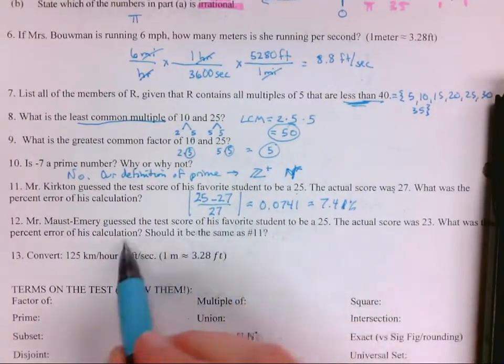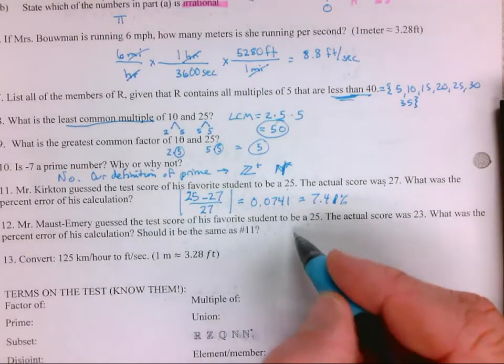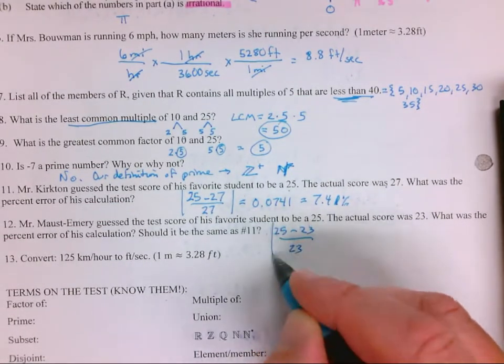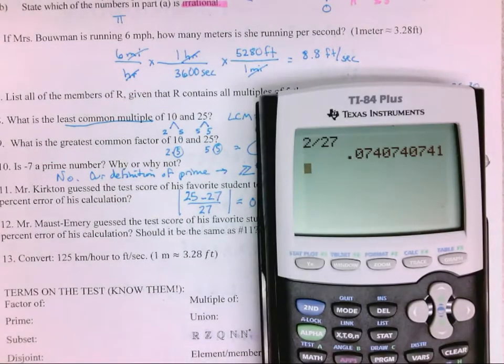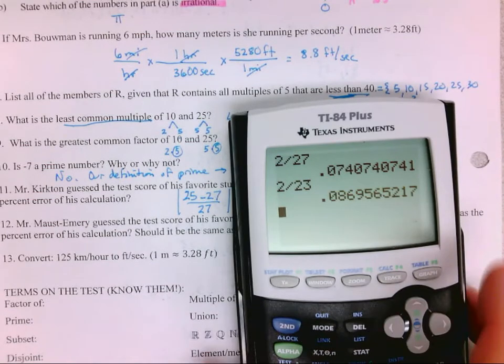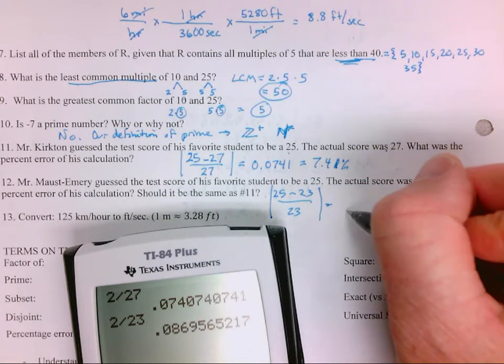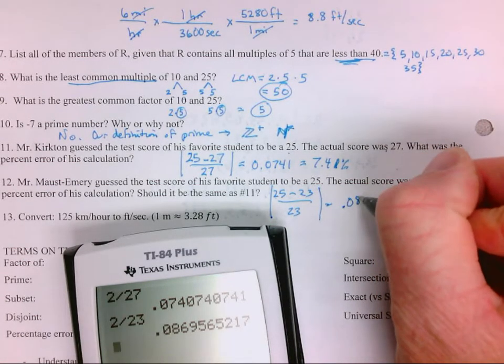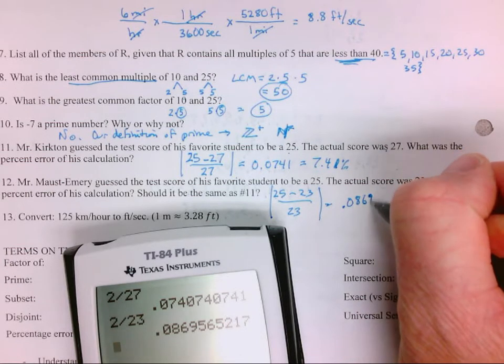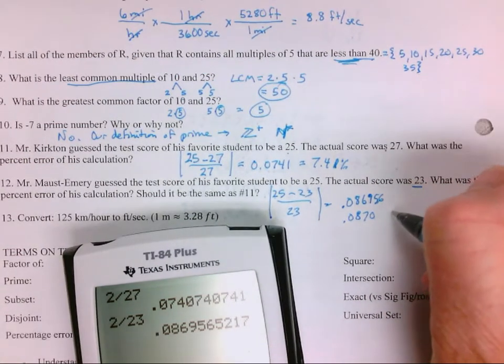Mr. Mead guessed the same thing. Favorite student would be 25. The actual score is 23. So 25 minus 23 over 23. Again, they're off by 2, but it does not leave the same answer because the denominator... So because the actual score was lower, that changes your...